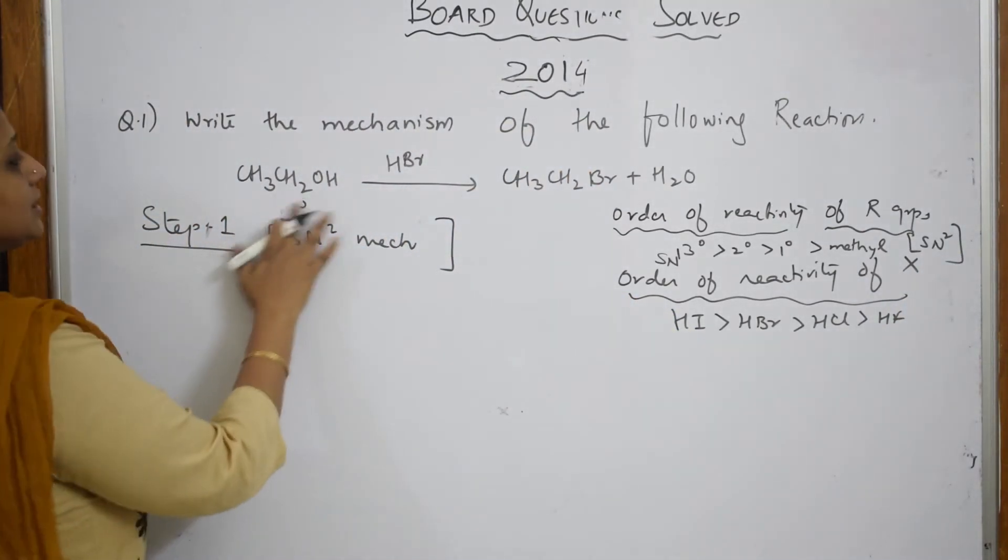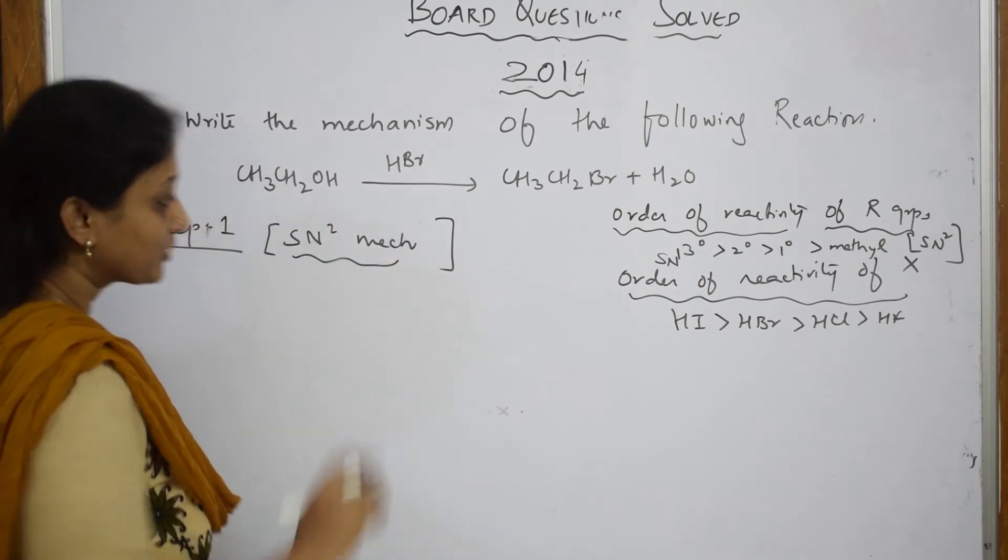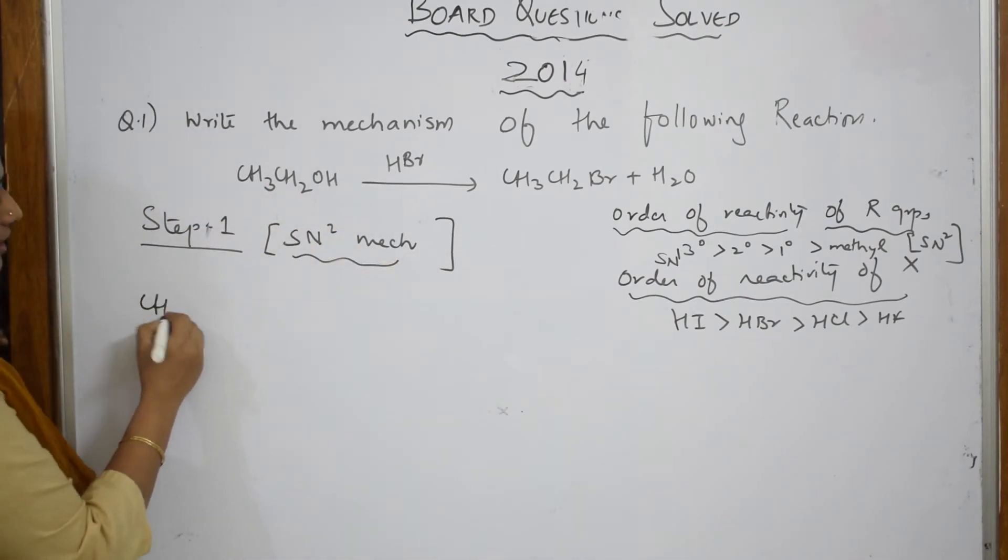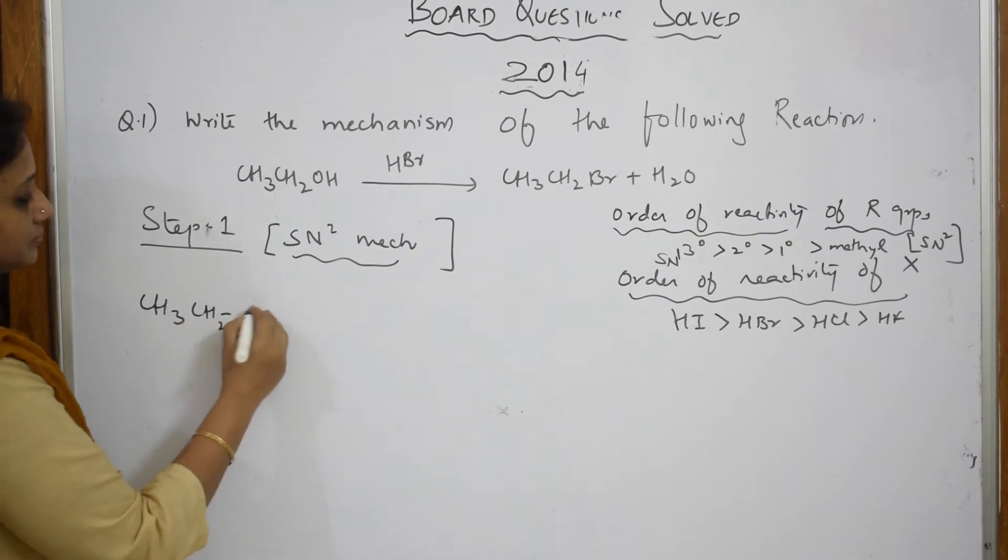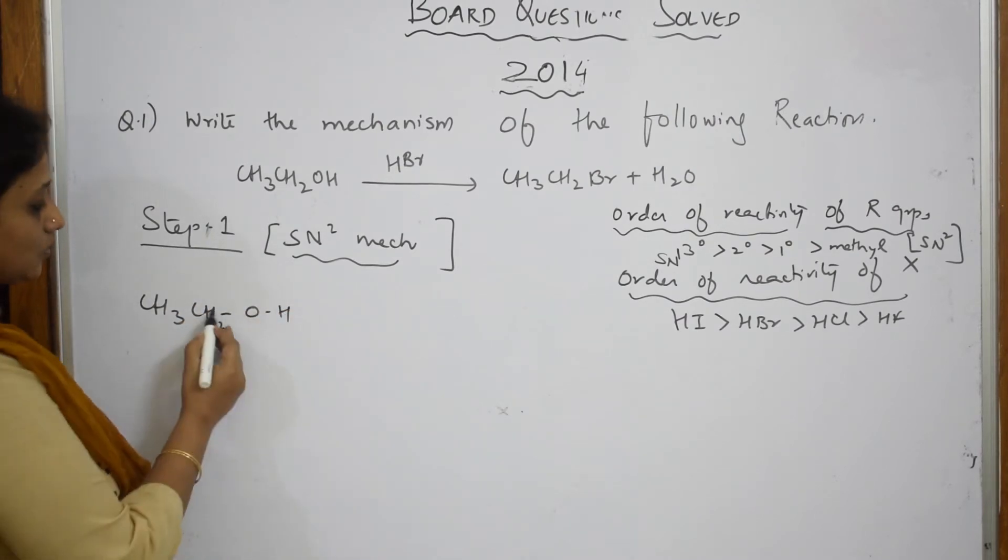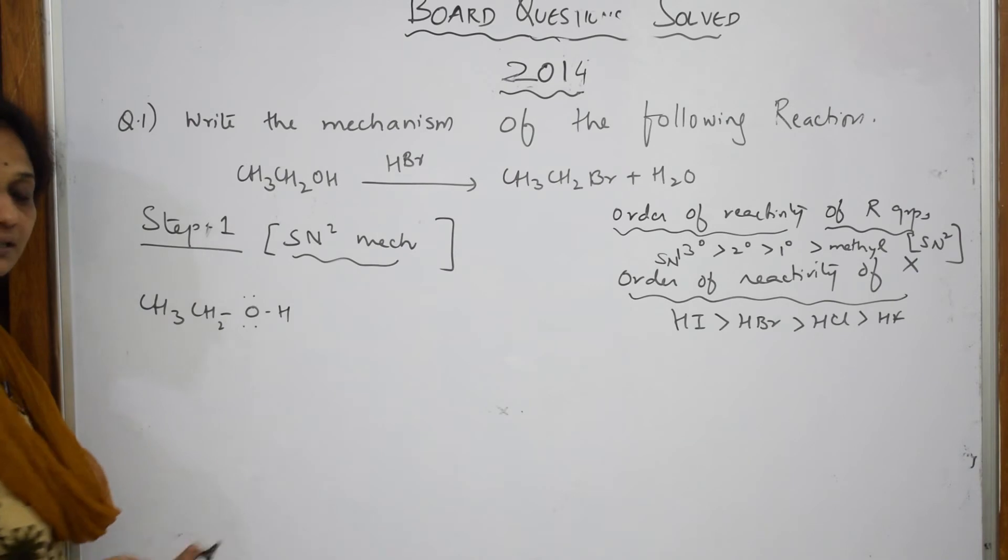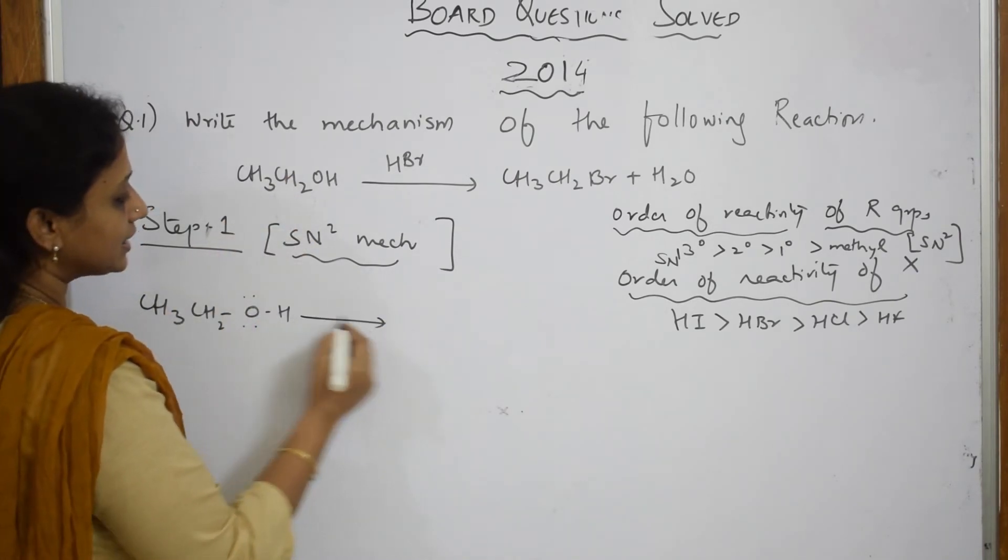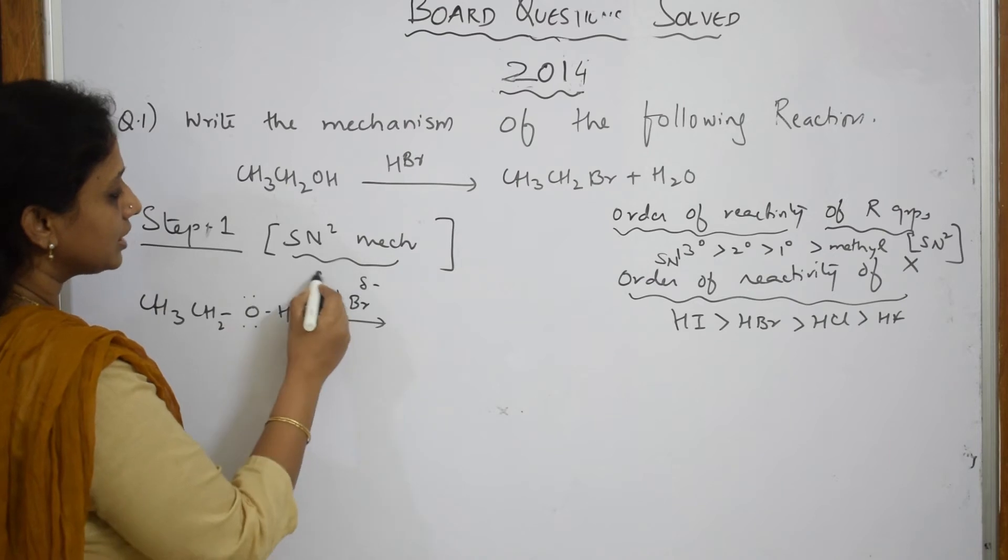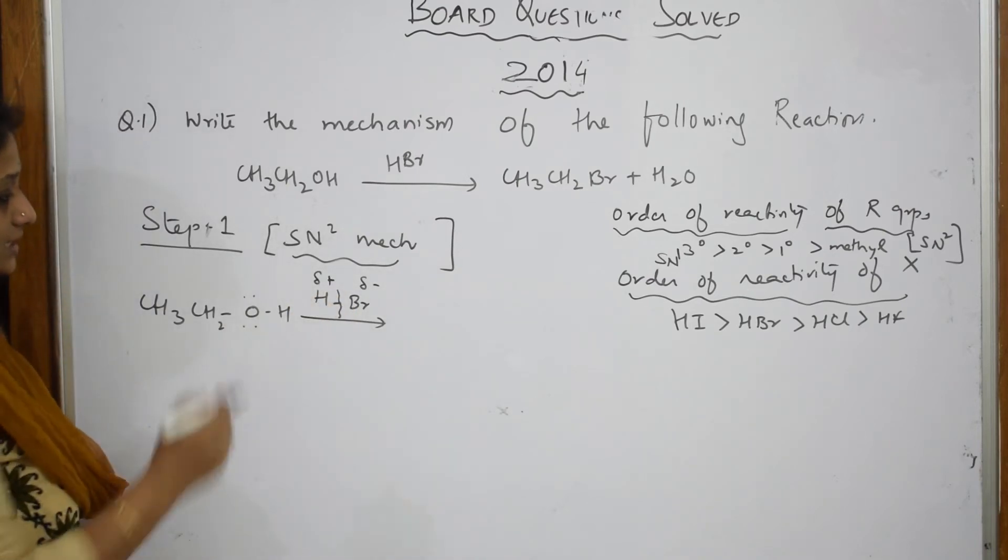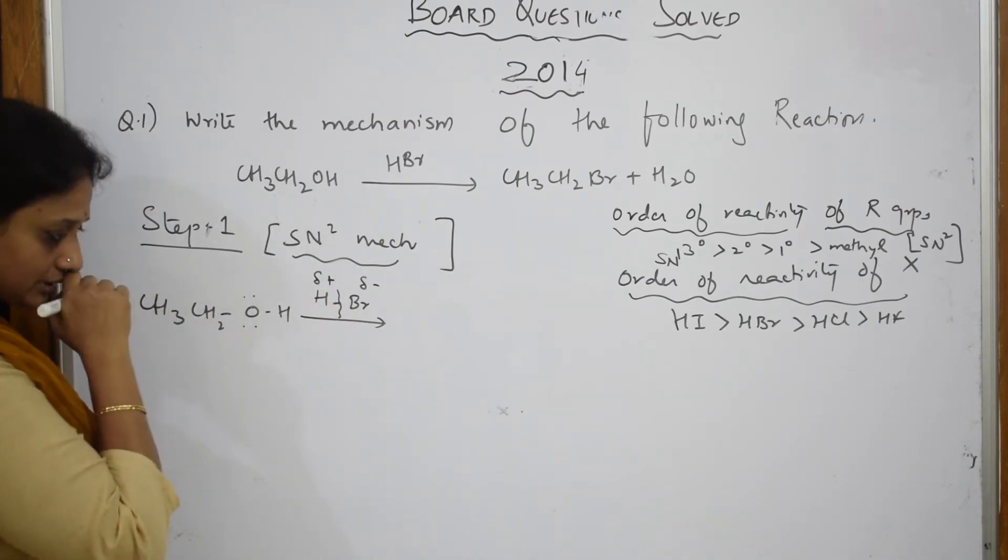This particular thing your primary alcohol is undergoing SN2 mechanism. First step. I have taken your alcohol CH3 CH2 OH. Now, your HBR is going to attack. We very well know electronegative bromine and positive hydrogen. Observe carefully.